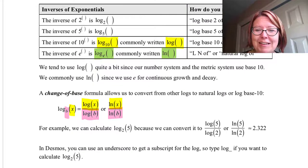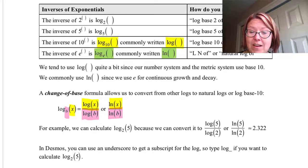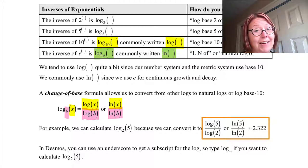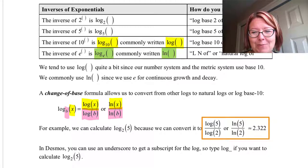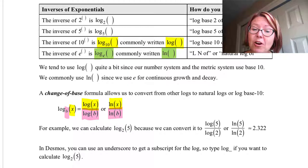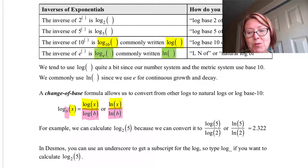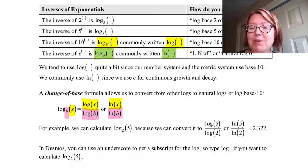For example, we can calculate log base 2 of 5 because we can convert it to either log of 5 over log of 2, or natural log of 5 over natural log of 2. Either way you calculate it, you get approximately 2.322. Now in Desmos, you can also use an underscore to get a subscript for the log. So you can type log underscore to get down into the subscript, then write 2, arrow to the right, and then get 5.